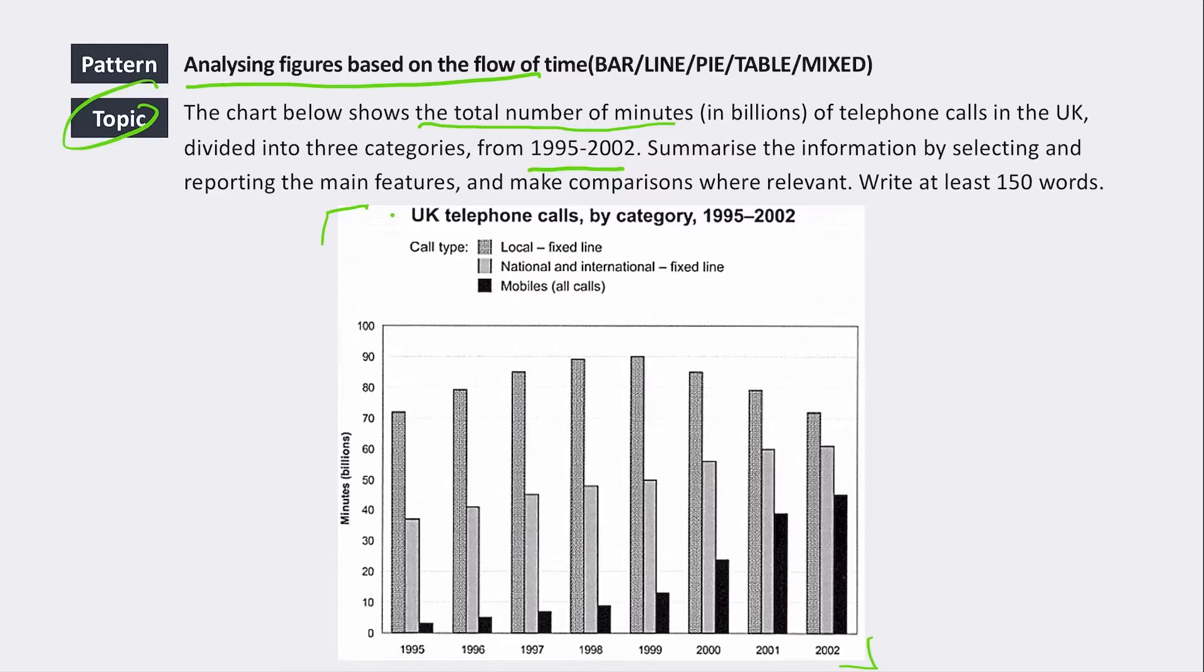Okay, so we've got UK telephone calls and it's all in the past, so we know that we should be writing everything in the past tense. And we've got three types of calls: local, national and international, and then mobile phone calls.